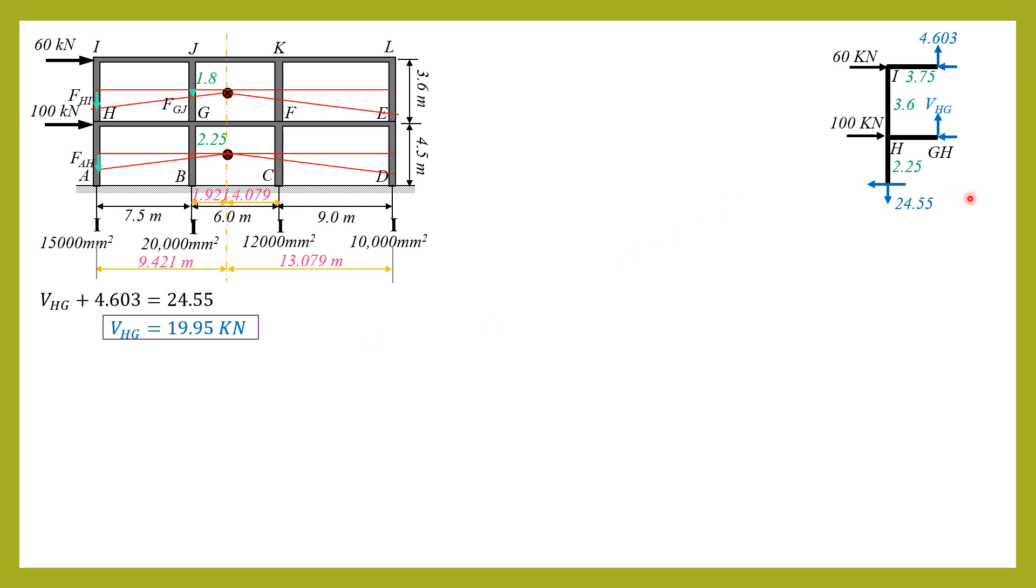Then next is the moment at a. So we need this shear force here, and this is the free body diagram to solve for this shear force. To solve for this shear force we need to solve for vhi first. So considering the free body diagram of this part, summation moment about this point we can solve for vhi. So summation moment about this point equals zero. vhi times 1.8 equals 4.603 times 3.75. So vhi is equal to 9.590 kilonewtons.